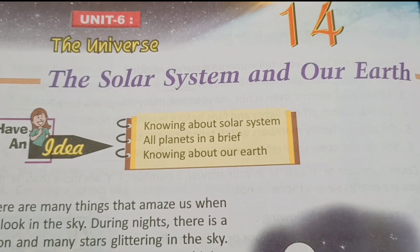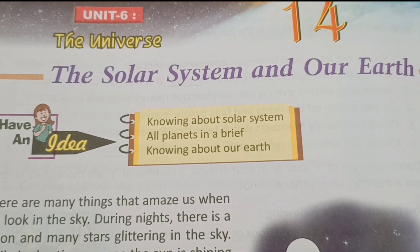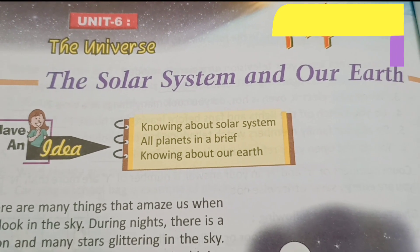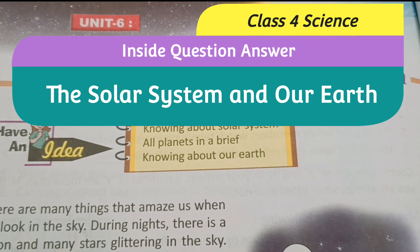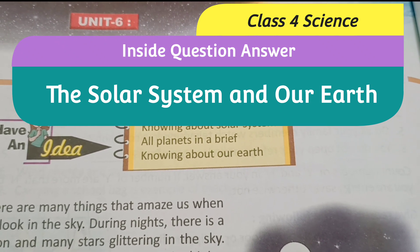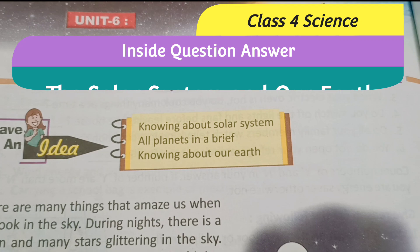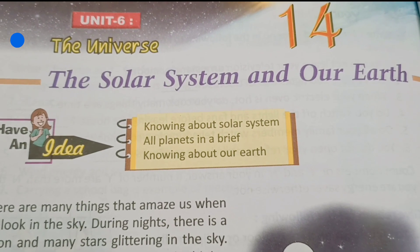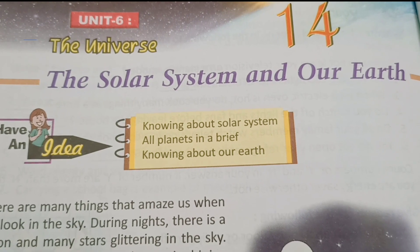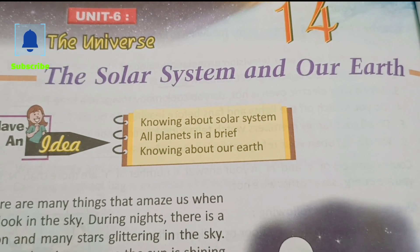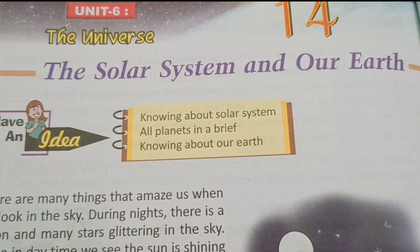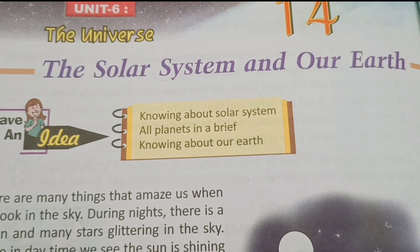Hello students, welcome to West Bengal English Video Guide. Today we are going to solve chapter 14, The Solar System and Our Earth, from Class 4 Science book, and also try to find out some inside question answers. Please like the video, subscribe the channel, and press the bell icon to get further notifications. If you missed any video, please check out the description box or playlist.